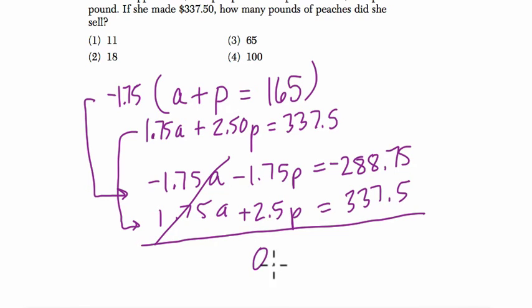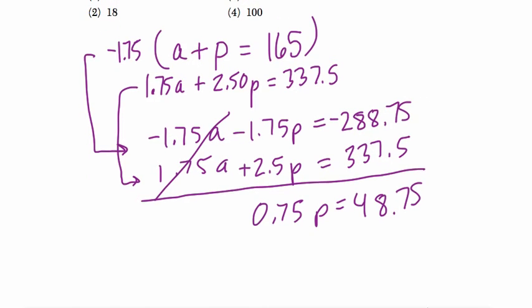And now we can solve for P. We get 0.75P equals 48.75. Figure out negative 288.75 plus 337.5. We divide both sides by 0.75, right? Use a calculator for this.